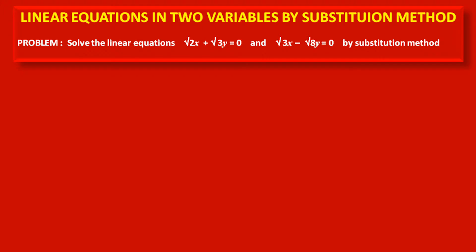Friends, now we have to solve the linear equation: root 2x plus root 3y is equal to 0, and root 3x minus root 8y is equal to 0, by substitution method. The different thing here is that the coefficients are irrational numbers. We have to solve this problem with irrational coefficients — this is the new thing in this problem.